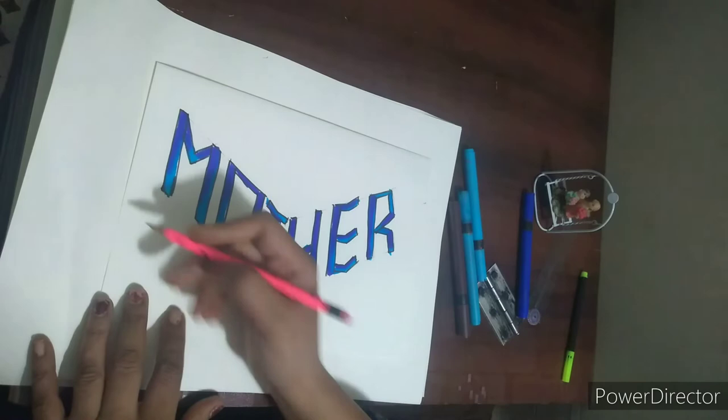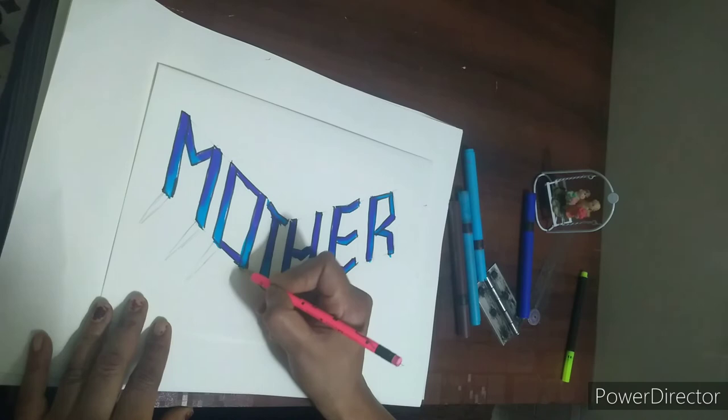Now we are going to make the shadow of it. Now we draw first here some lines like this to show the shadow.